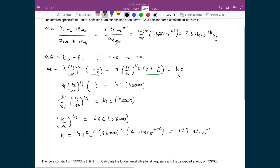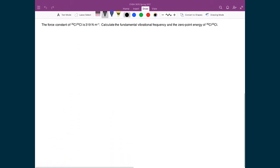That leads us to our second example. In this case we're given the force constant of a chlorine gas molecule, 319 newtons per meter. We're supposed to calculate the fundamental vibrational frequency and the zero point energy of this molecule.